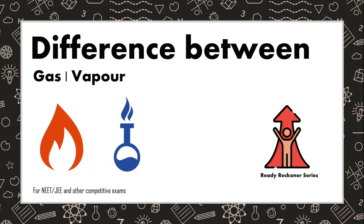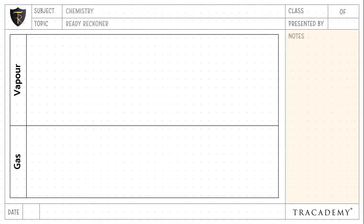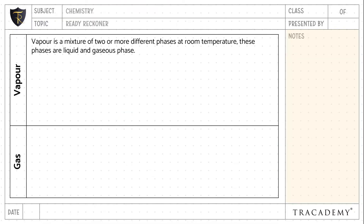In this video, let's understand the difference between Vapor and Gas. Vapor is a mixture of two or more different phases at room temperature. These phases are liquid and gaseous phase, whereas gas usually contains a single thermodynamic state at room temperature.